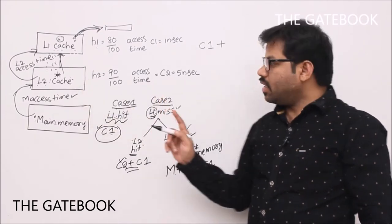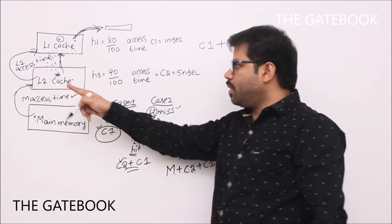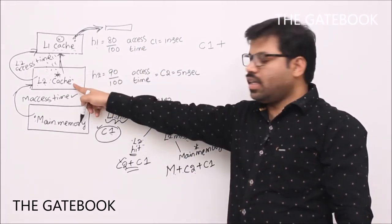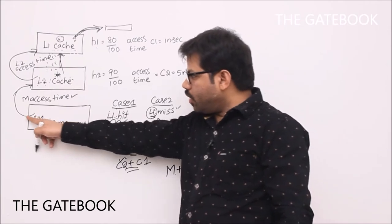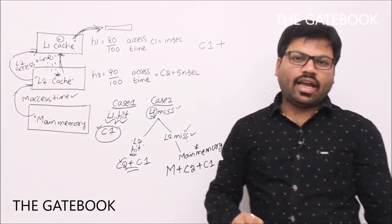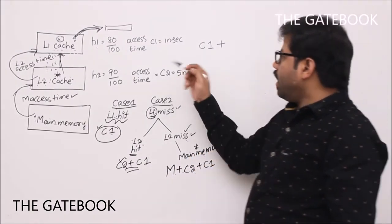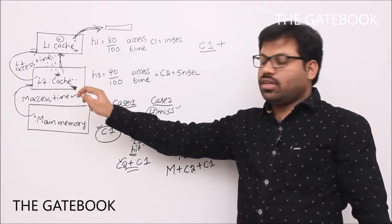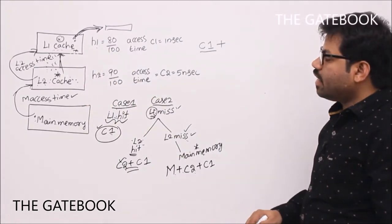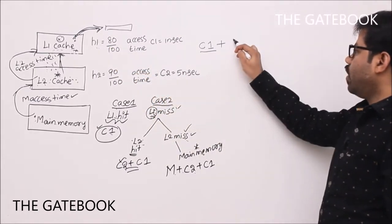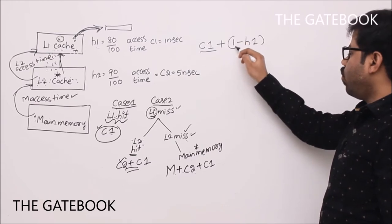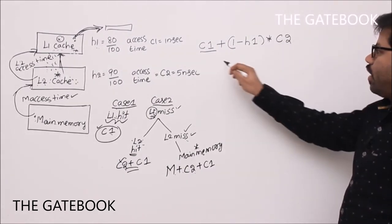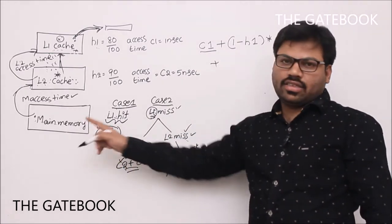There is no 'only L2' case: if L2 hits, we still access L2 to transfer data to L1; if L2 misses, we again access L2 when transferring from main memory. So C1 is compulsory every time, and C2 is compulsory whenever L1 misses. The percentage of time L1 misses is 1 minus H1.